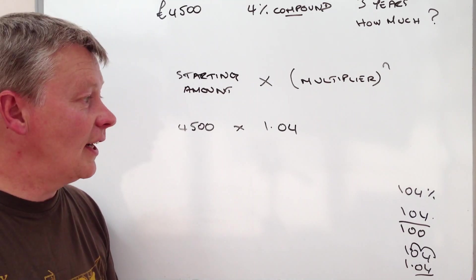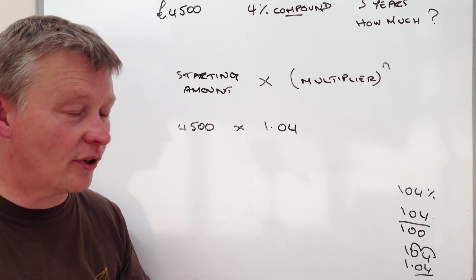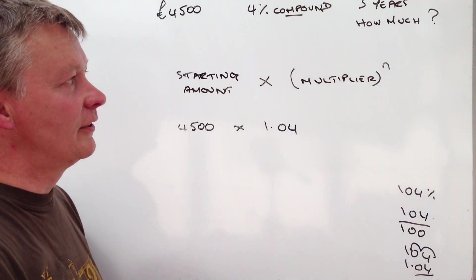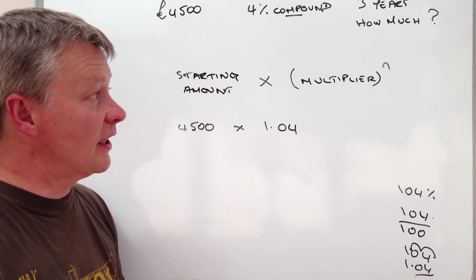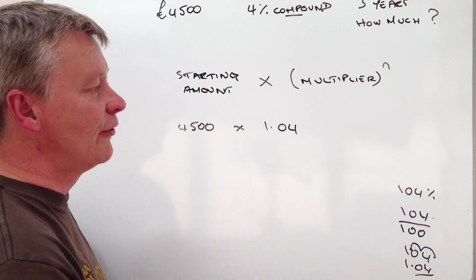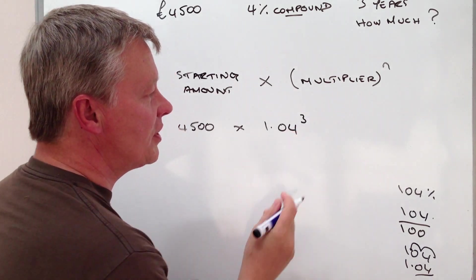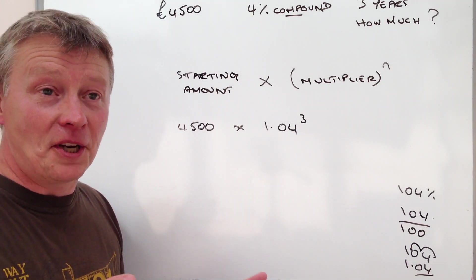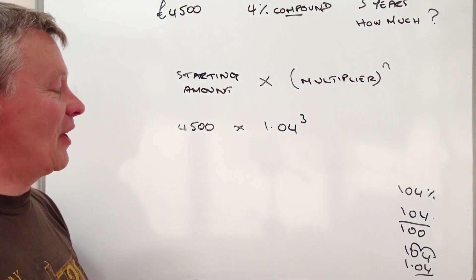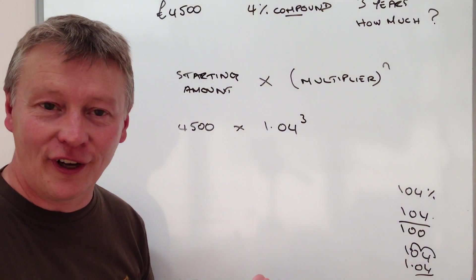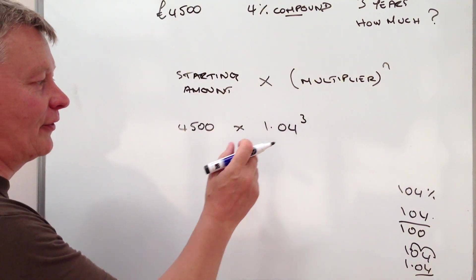The n number is the three years. In this particular case, it's the number of years. So it's 1.04 to the power of three, which is the same as 1.04 times 1.04 times 1.04. And if we multiply all of that by 4,500, then that will give me the amount after three years.